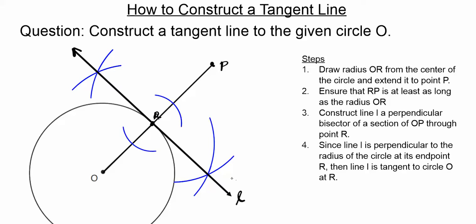Now, this line we know is tangent to the circle for the following reason. This line is perpendicular to the radius at its endpoint. Any line that's perpendicular to the radius of a circle at its endpoint is tangent to the circle with that radius. That's a theorem that allows us to conclude that line L is tangent to circle O.